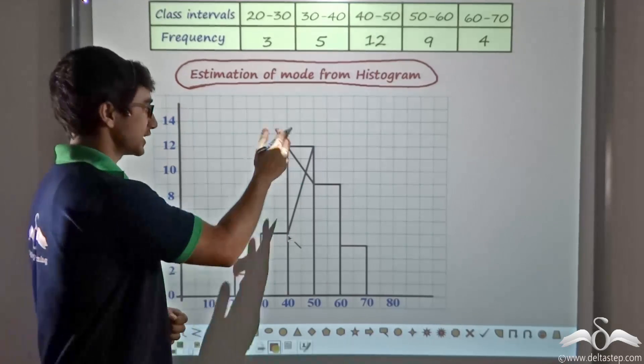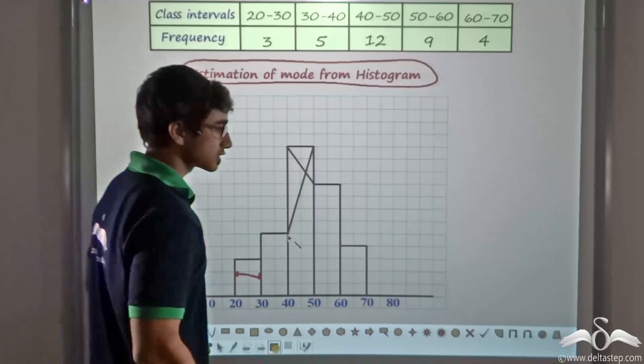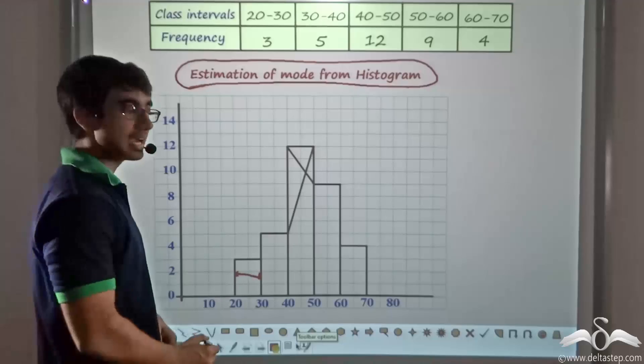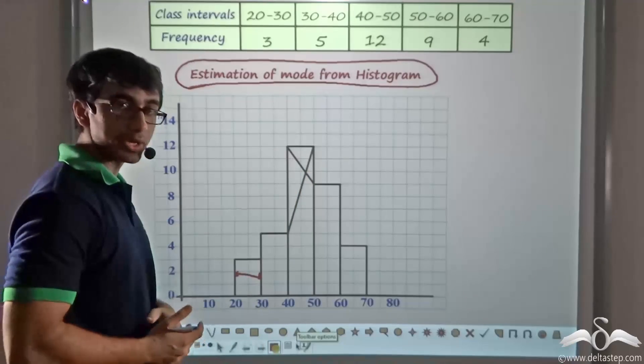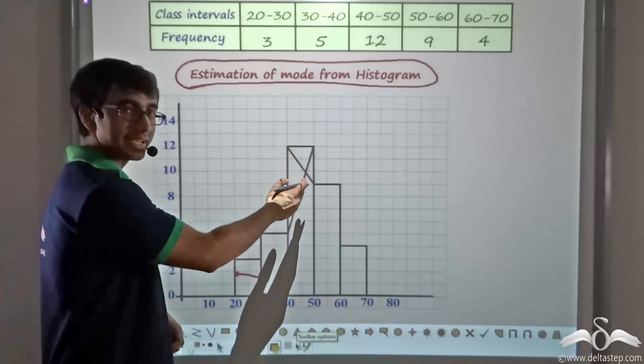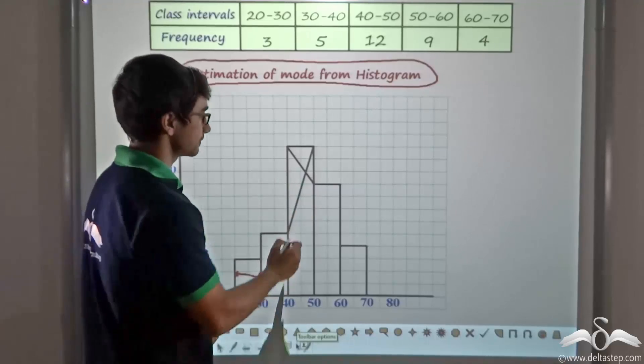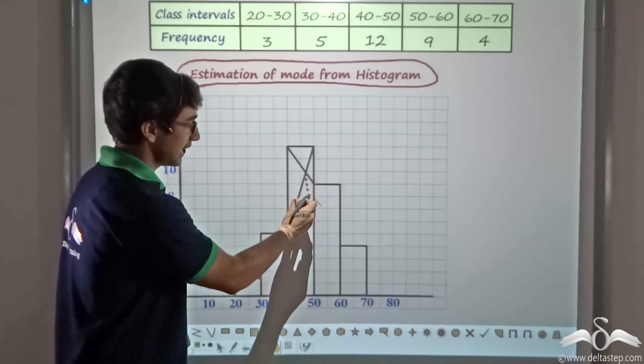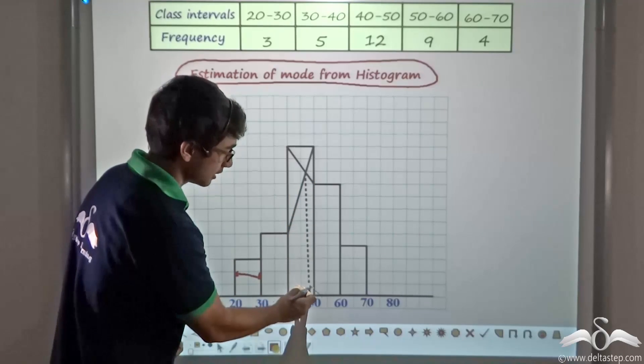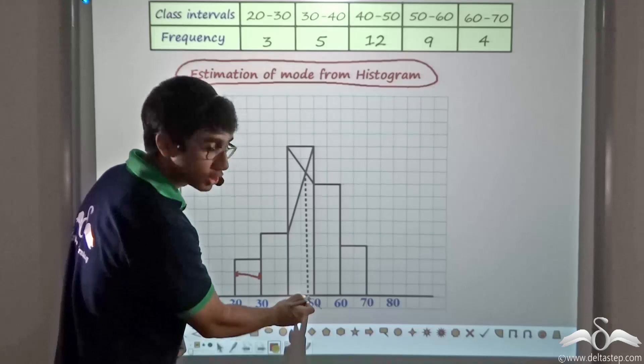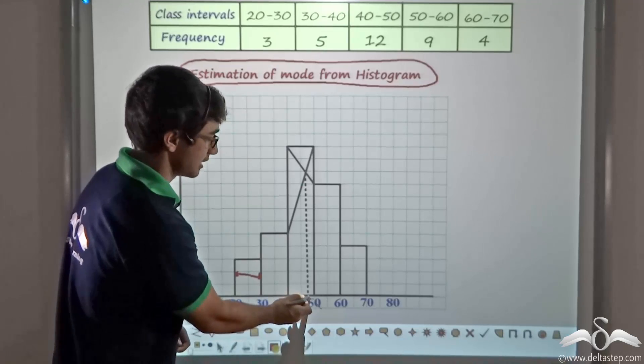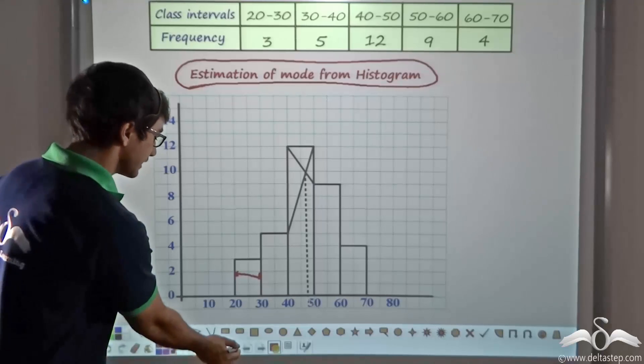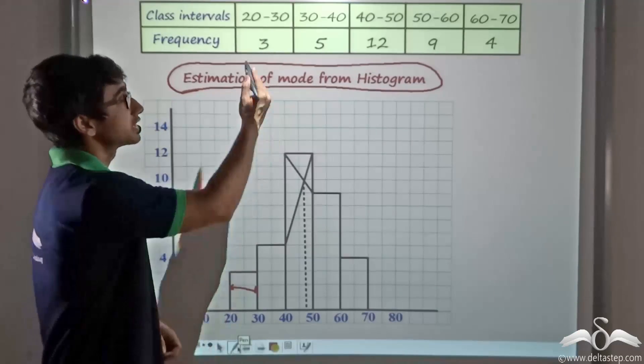Now I have obtained a cross-like structure. If you notice closely, these two straight lines have intersected at a particular point. From that point of intersection, I draw a straight line perpendicular to the x-axis. The point where this line meets the x-axis will give us the mode of the given data set.